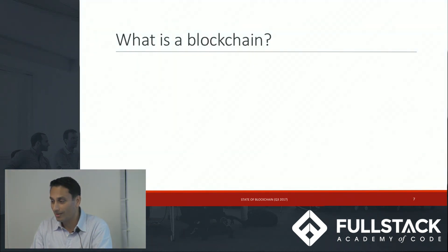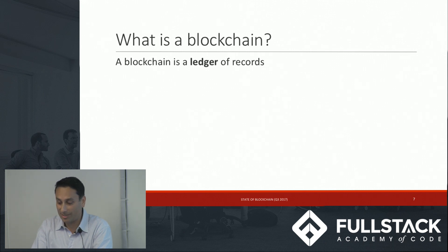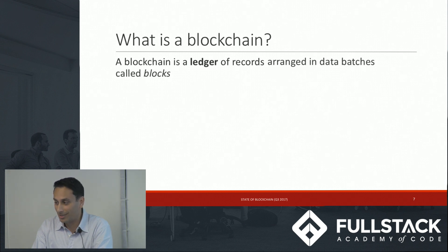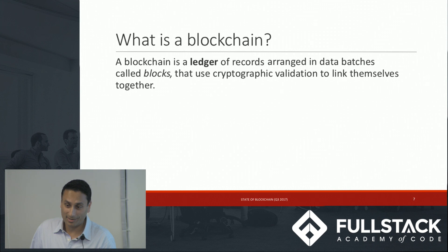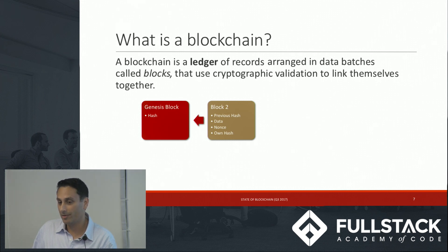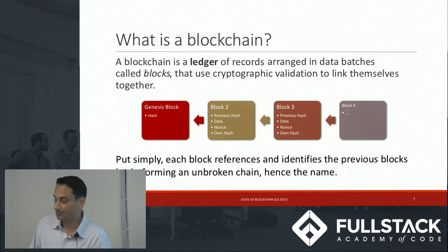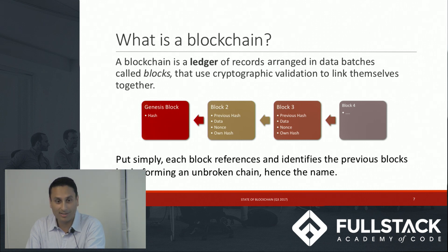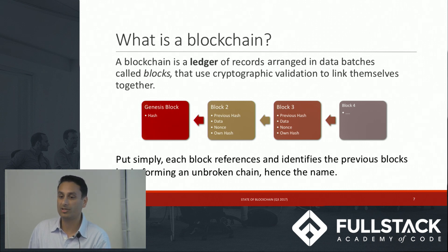So what is a blockchain? A blockchain, simply put, is a ledger of records arranged in data batches called blocks. Each block is cryptographically validated and linked together — that is a blockchain. It starts with a genesis block, similar to a queue or linked list starting with a header, and every subsequent block points to the previous block's hash. It is similar to a linked list, but not a linked list. In a linked list you have a pointer to the next block; in a blockchain you have a reference to the previous block's hash.